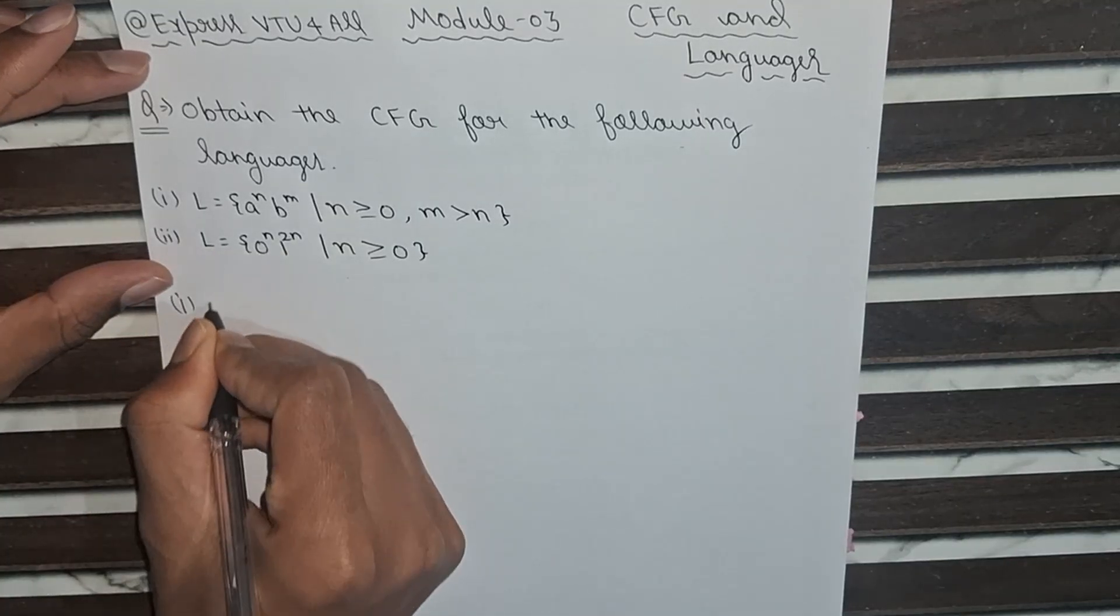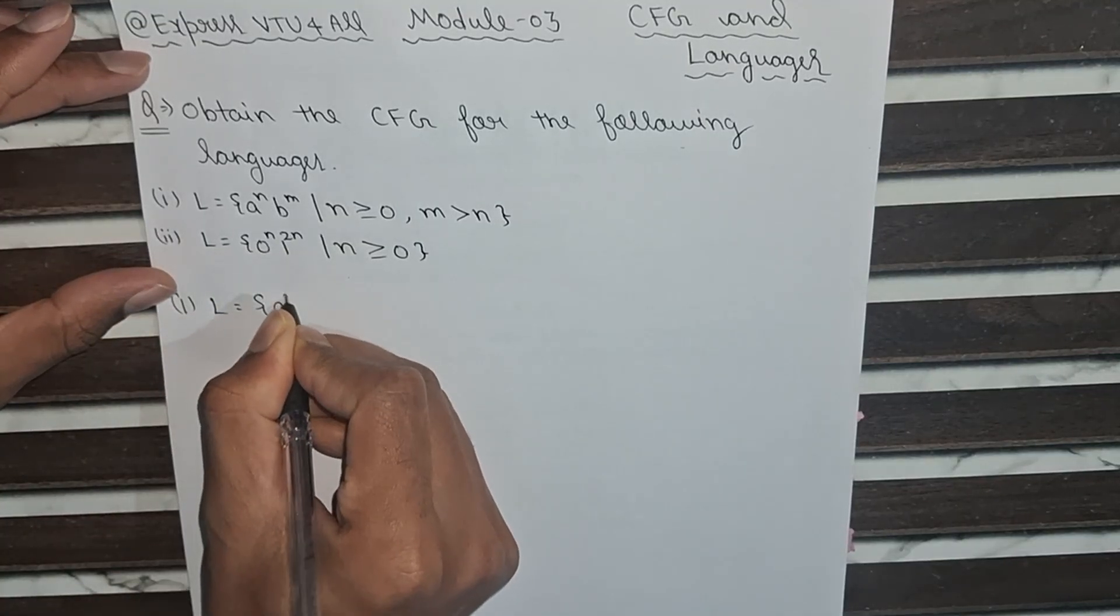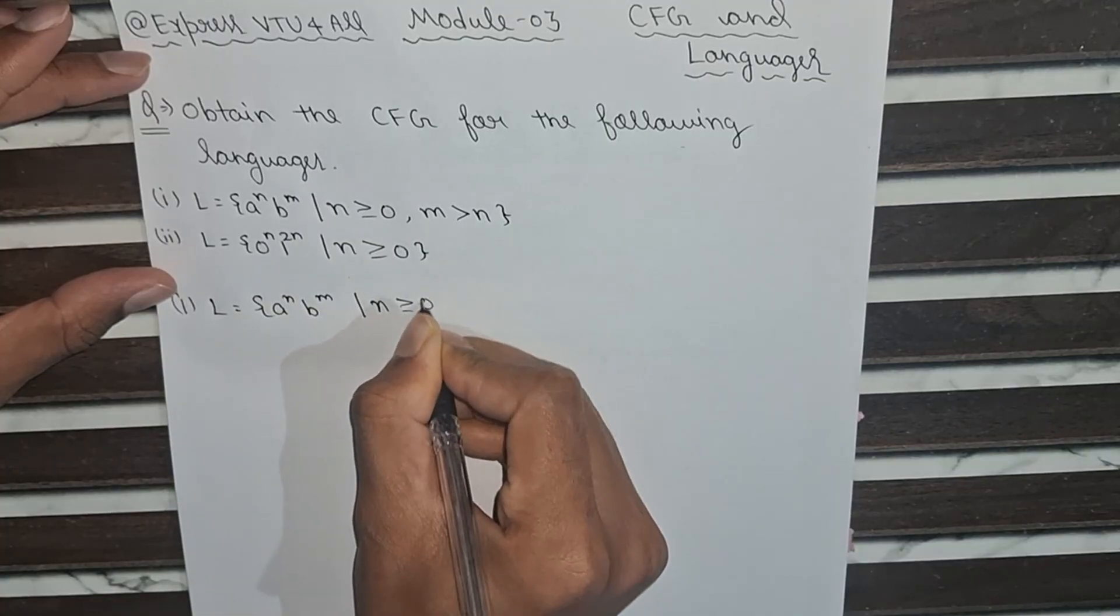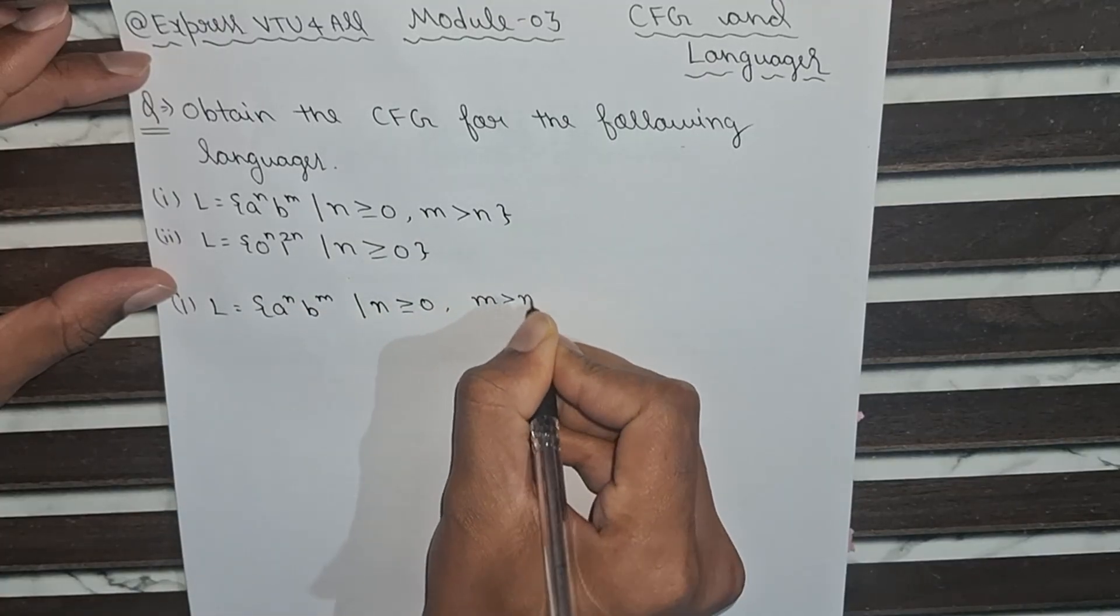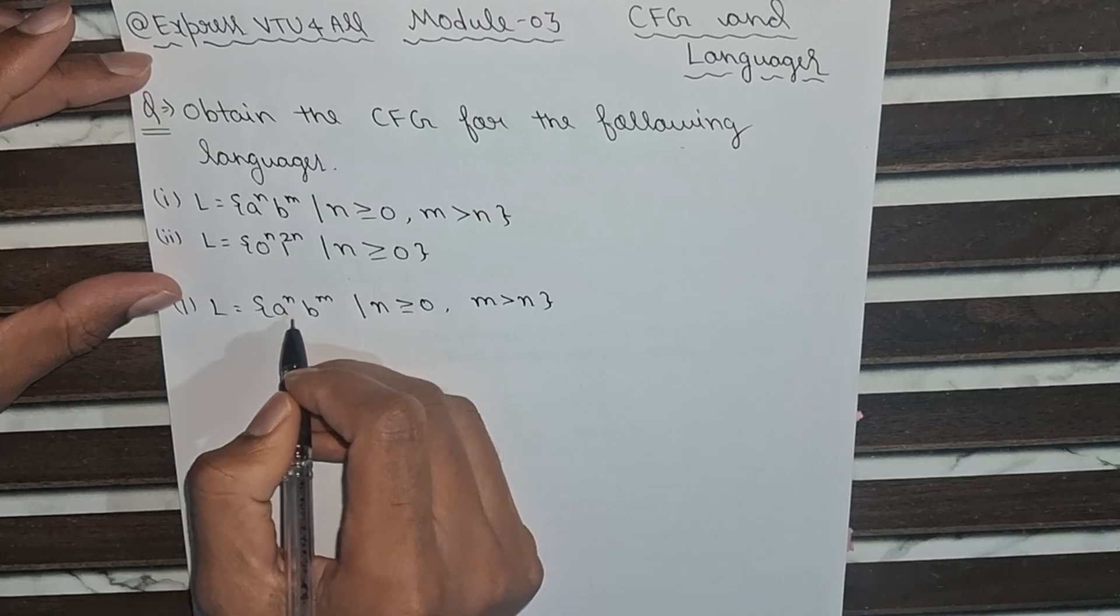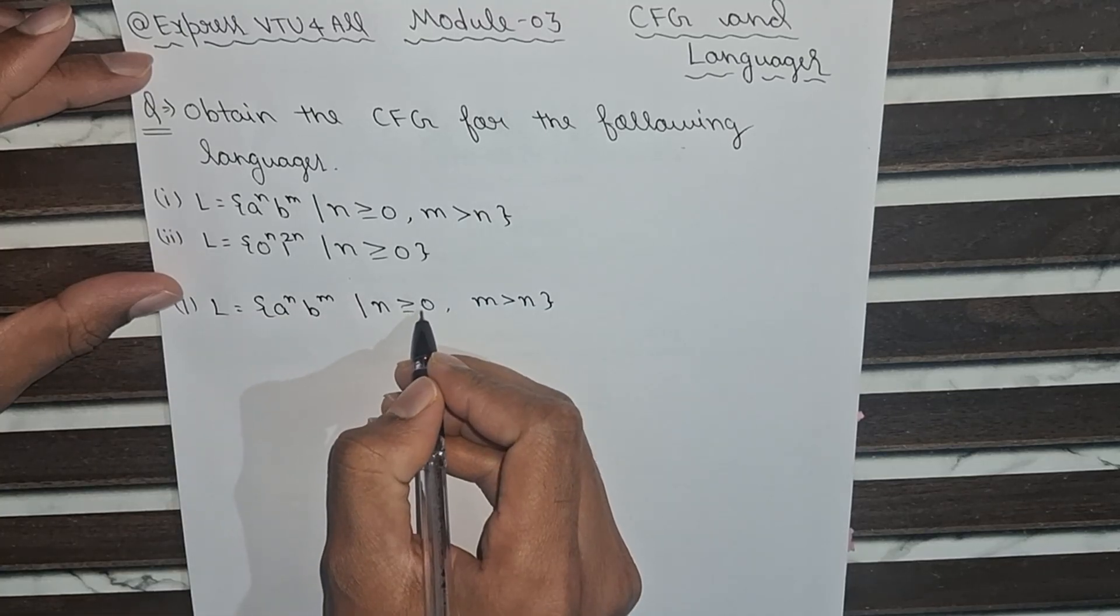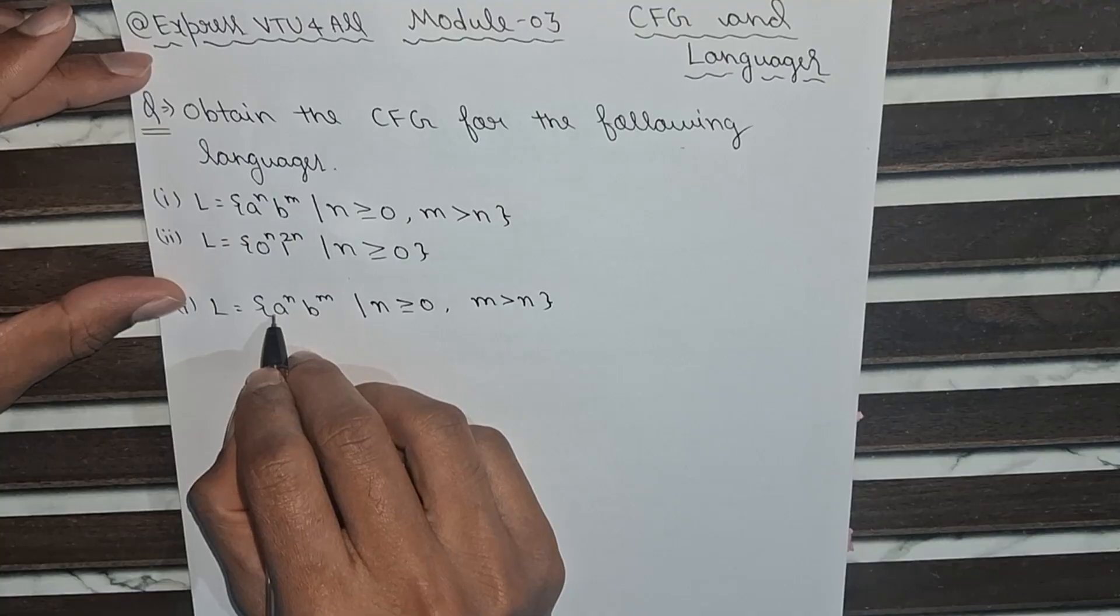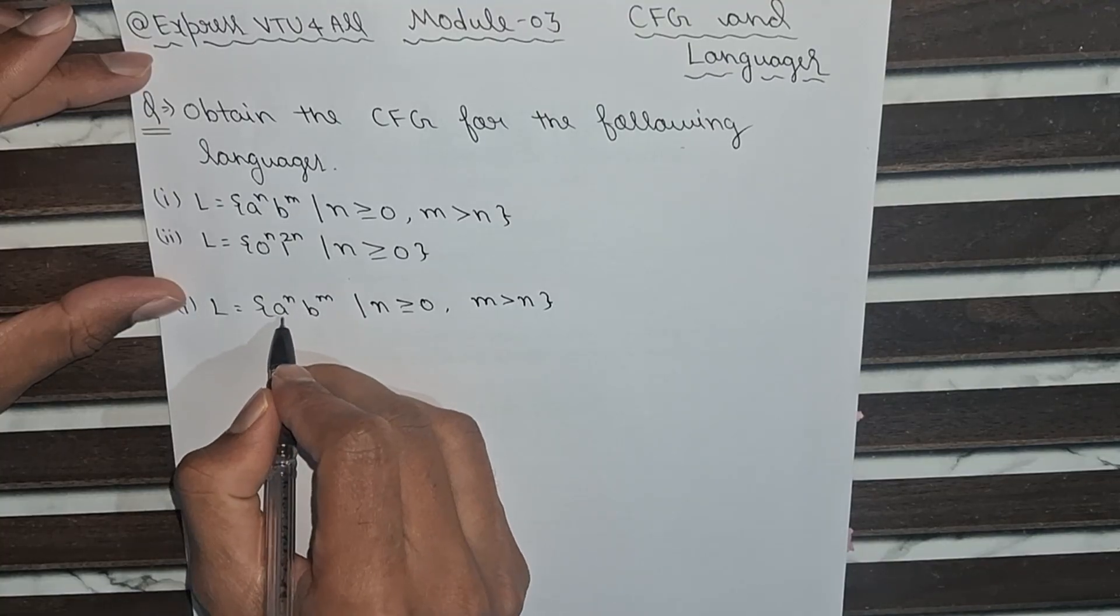First language is L equals a to the power n, b to the power m. Here n is greater than or equal to 0 and m is greater than n. So in this case, a is greater than or equal to 0, but b is greater than a. So number of b's will be more than number of a's.